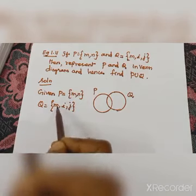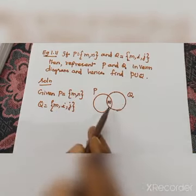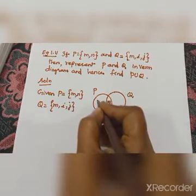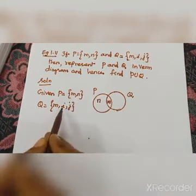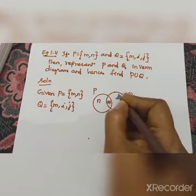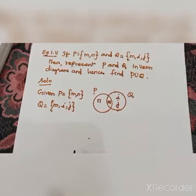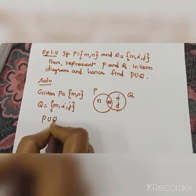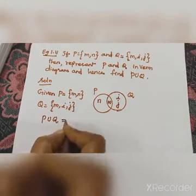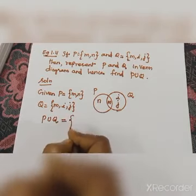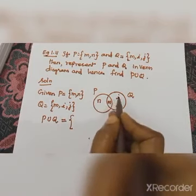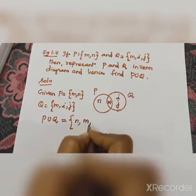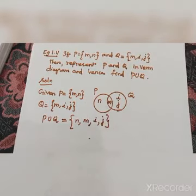The element M is in both sets, so M is written in the center common part. Remaining in P is N, written in P's side. Remaining in Q are I and J, written in Q's side. Therefore P union Q is equal to {M, N, I, J} — all elements of both sets together.